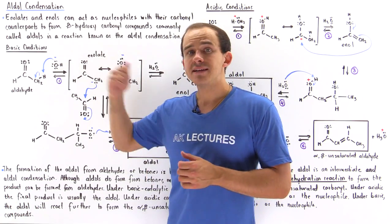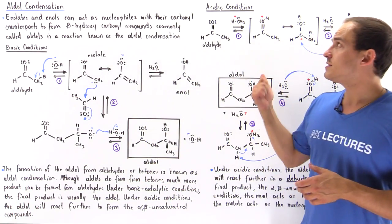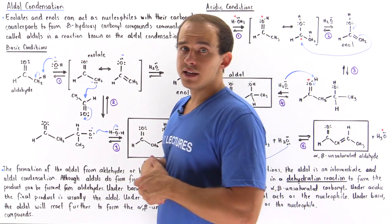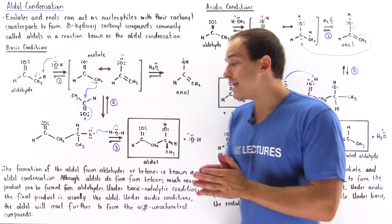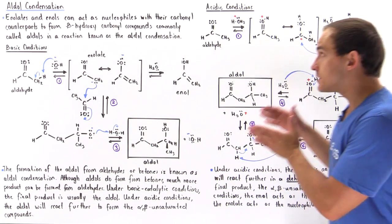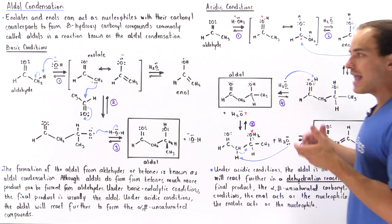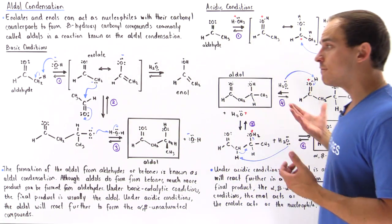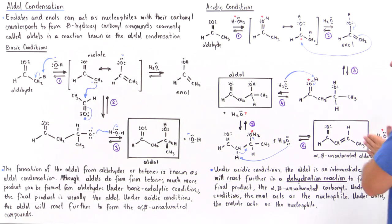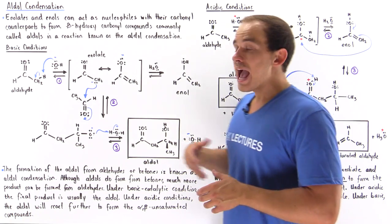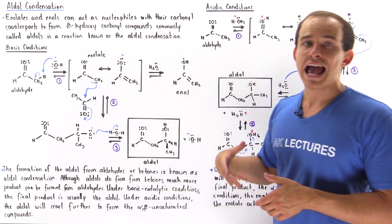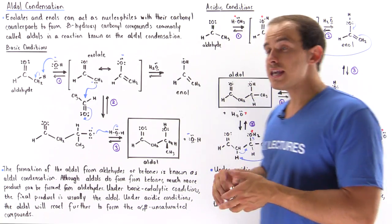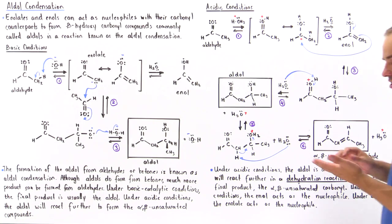We have basic catalytic conditions or acidic catalytic conditions. Under basic conditions, the final product is our aldol. Under acidic conditions, the aldol is actually an intermediate — the aldol goes on to form a final product in a dehydration reaction, and that final product is known as an alpha-beta-unsaturated carbonyl compound.